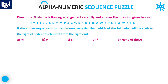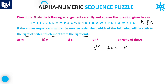Next question: if the above sequence is written in reverse order, which of the following will be the 6th to the right of the 16th element from the right? First, before reversing anything, determine the position. We need the 6th right of the 16th element from the right. Since both directions are 'right,' take the difference: 16 minus 6 equals 10. So we need the 10th element from the right.